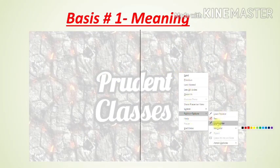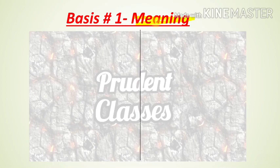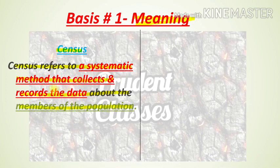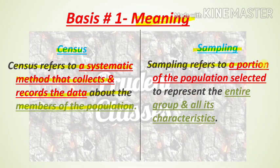Let's start the topic with a point-by-point discussion. First, we will understand the meaning of census and the meaning of sampling. Census refers to a systematic method that collects and records data about all the members of a population.